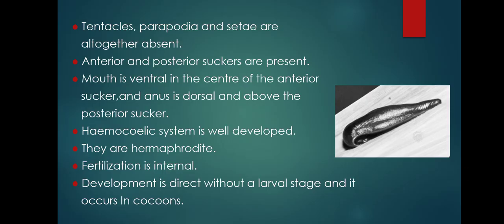Tentacles, parapodia, and setae are all absent. Anterior and posterior suckers are present. The mouth is ventral in the center of the anterior sucker, and the anus is dorsal and above the posterior sucker. Since parapodia and setae are absent, locomotion is achieved with the help of suckers along with longitudinal and circular muscular motion.